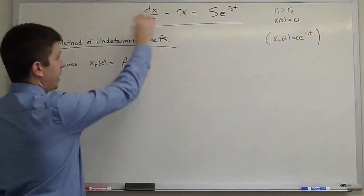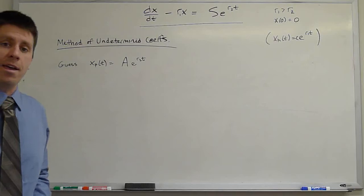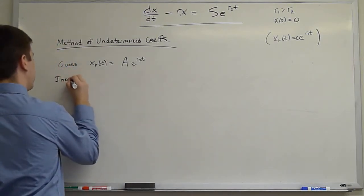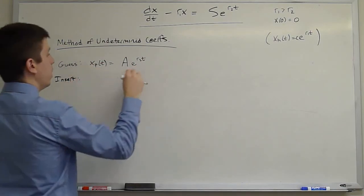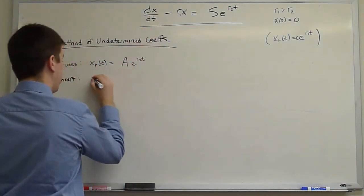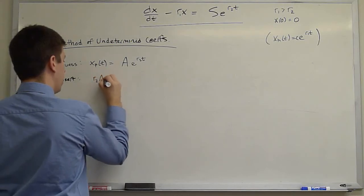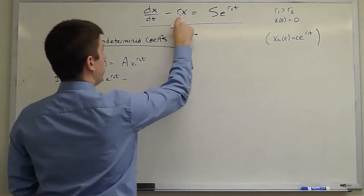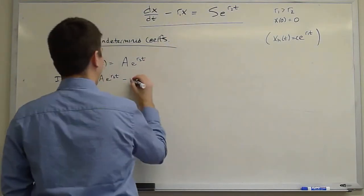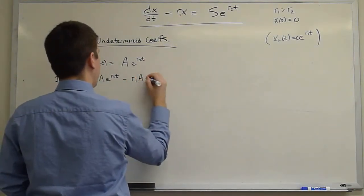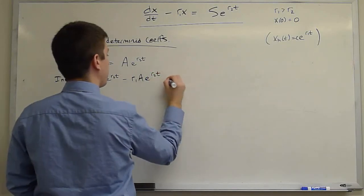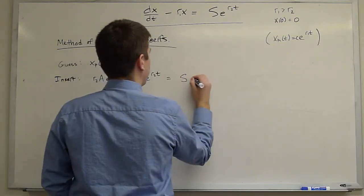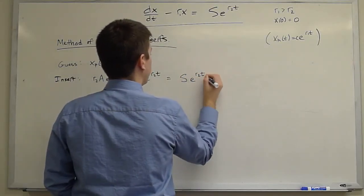And then I will insert this guess and see if I can find an A such that the equation is solved. So I insert, and what do I get? When I take the derivative, I will pull down an R2. R2A e to the R2t minus R1 times my guess, R1A e to the R2t equals S e to the R2t.